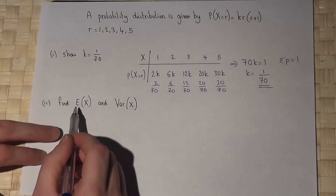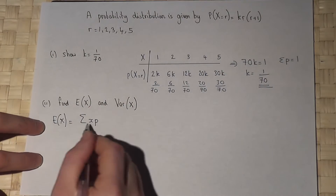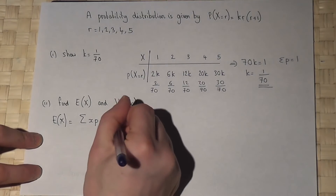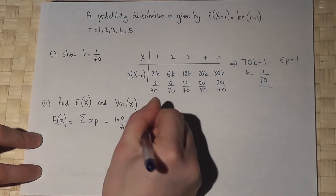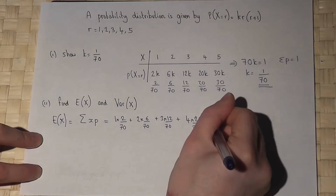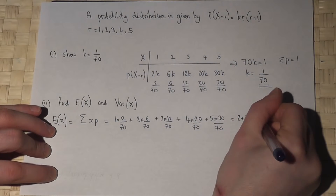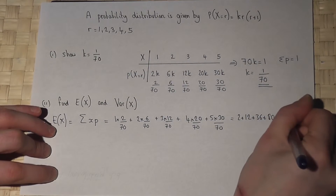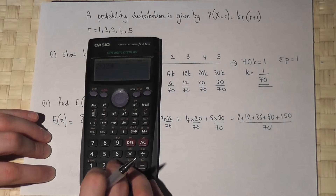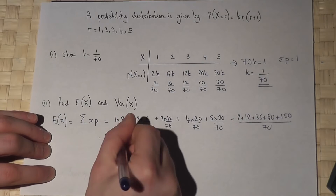To find the expectation or the expected value of x, we use the formula: the sum of x times p. So we compute 1 times 2/70, plus 2 times 6/70, plus 3 times 12/70, plus 4 times 20/70, plus 5 times 30/70. So we get 2 plus 12 plus 36 plus 80 plus 150, all over 70.